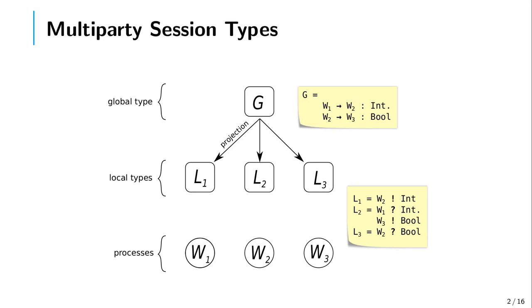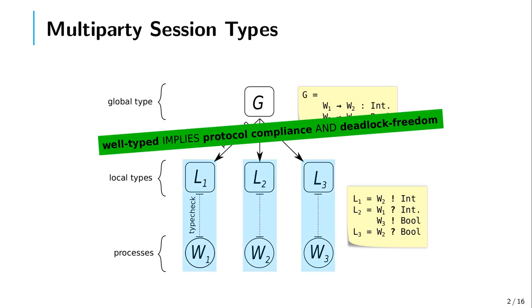The important operation of multiparty session types is called projection, which extracts the local behavior of each of the participants that take part in the protocol. In this case, w1 would behave as described by l1, which is sending an integer to w2. w2 would behave as described by l2, which is receiving an integer from w1 and then sending a boolean to w3. If we can guarantee that those processes indeed behave as described by the corresponding local types, then we can guarantee that the whole system complies with this protocol, complies with g, behaves as described by g, and also that the protocol is deadlock free.